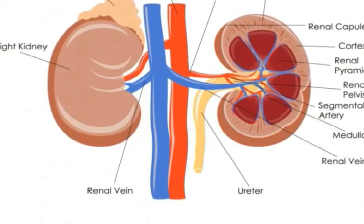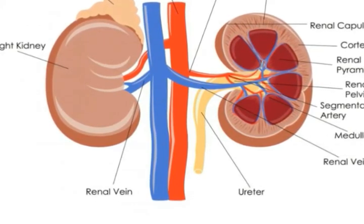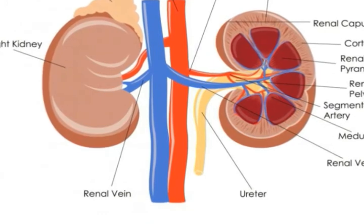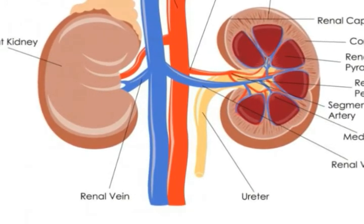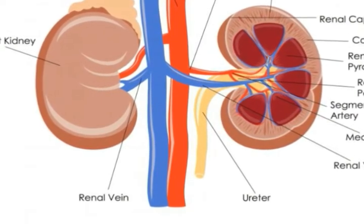Regular outpatient dialysis occurs every few days and takes a couple of hours. CRRT occurs much slower over a 24-hour time period. The slower rate allows for more precise and quick-acting control over the chemistry of the blood. This fine control is necessary for critically ill or injured patients, especially patients who are hemodynamically unstable.